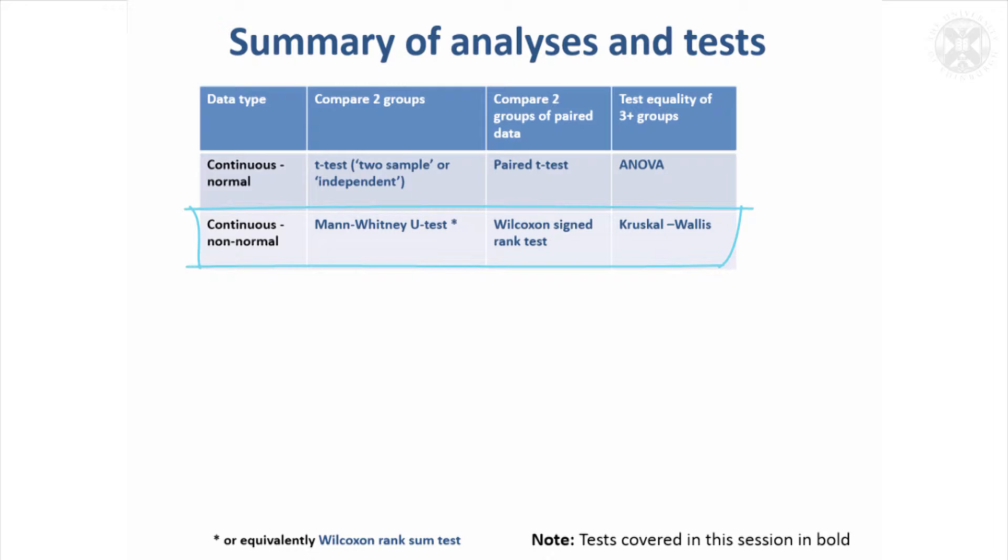So there's that Mann-Whitney U test which is also equivalently called the Wilcoxon rank-sum test. To compare paired data, there's a slightly different version - the Wilcoxon signed rank test. And then we've got the Kruskal-Wallis test if there's three or more groups to compare the overall equality.